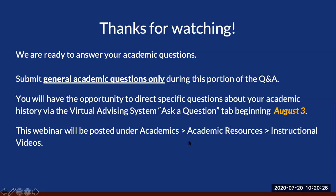Even though the Office of Admissions has not yet posted your academic credit for test scores or transfer coursework, it will not affect your enrollment and it will not affect the course recommendations we make. We base everything for the course recommendation on what you put on your academic background or lack thereof, and we also look to see if anything has been posted. Rest assured, it will not affect your enrollment and it will not affect the course recommendations.